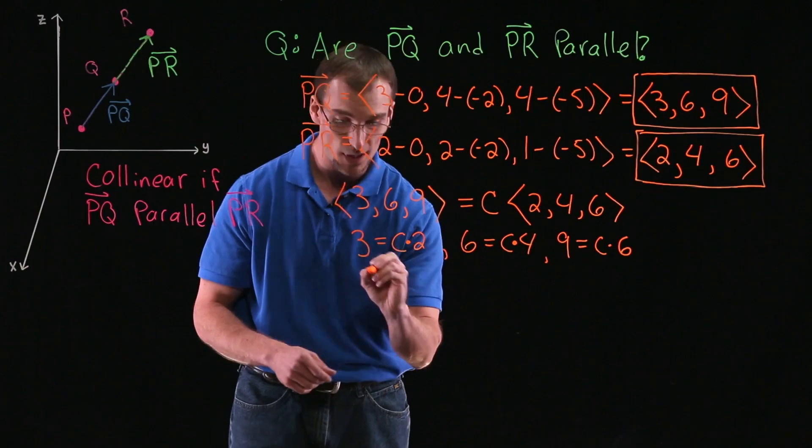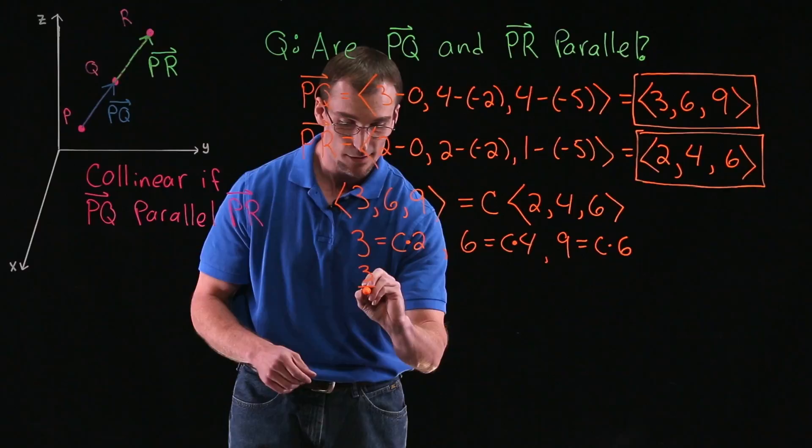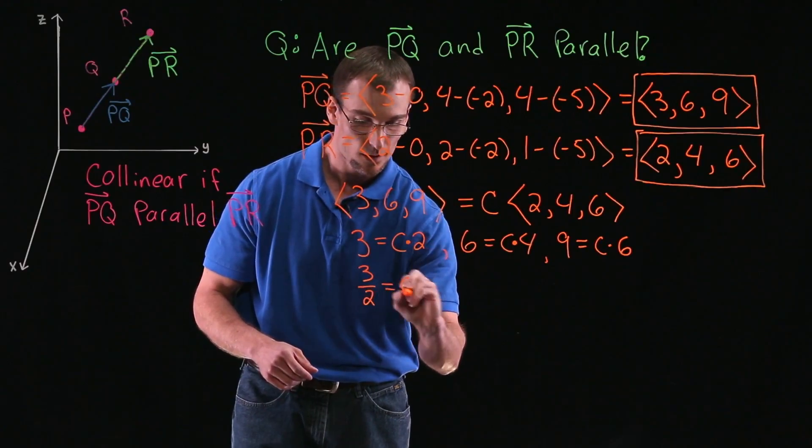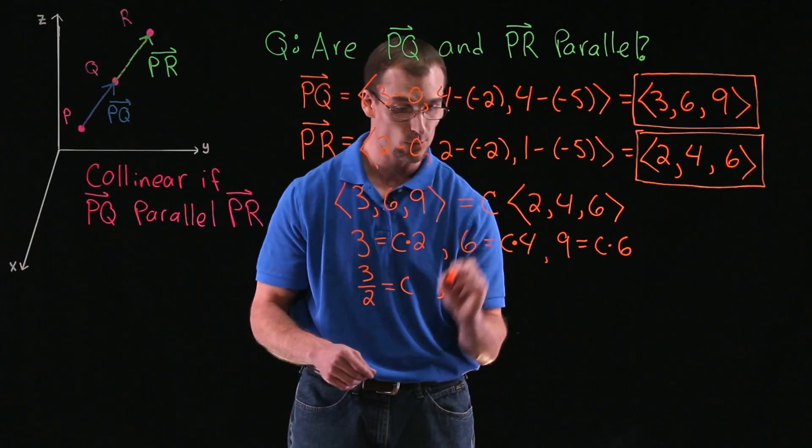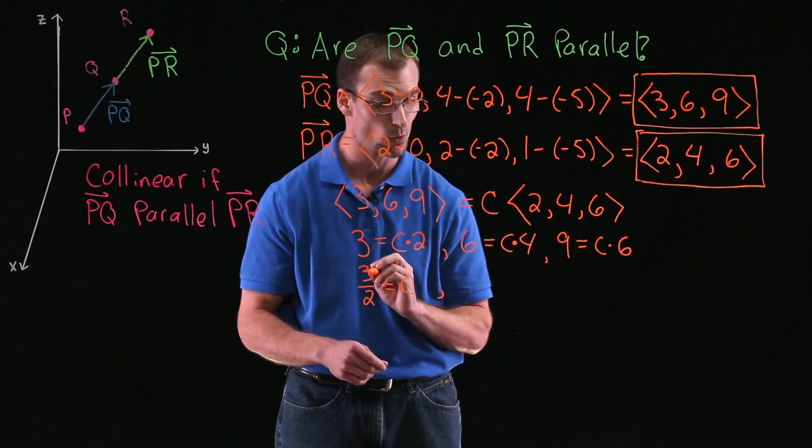So the first one, if we divide both sides by 2, we get that C is equal to 3 halves. And so what we want to see is we get the same value of C for these other two equations.